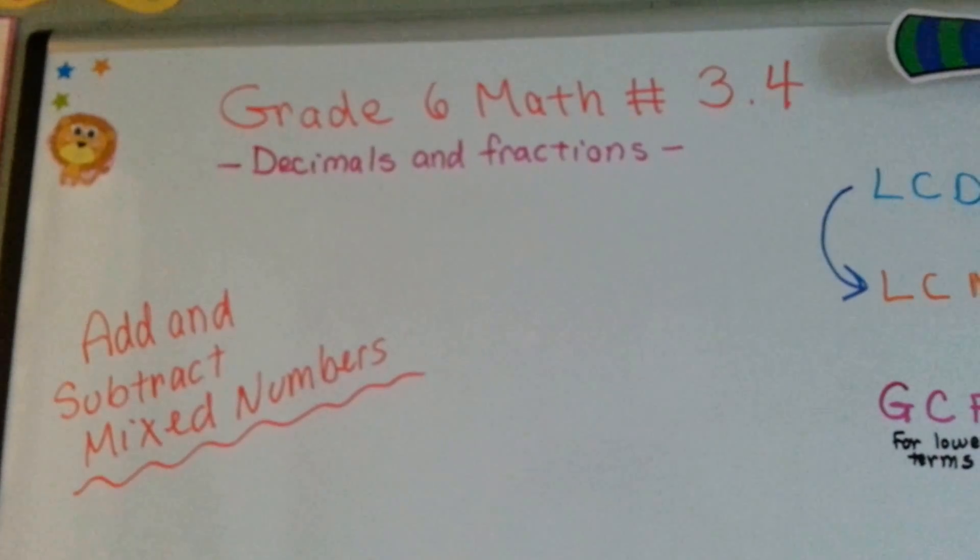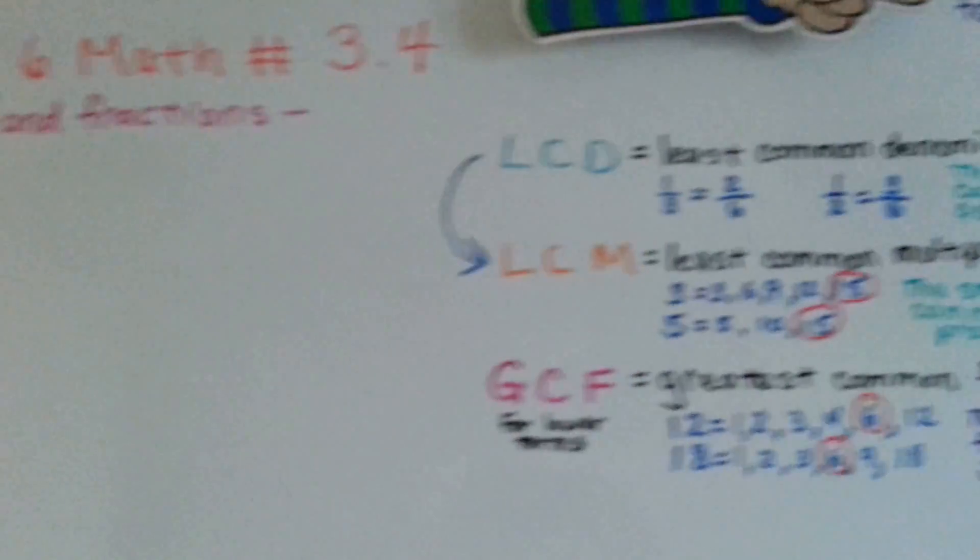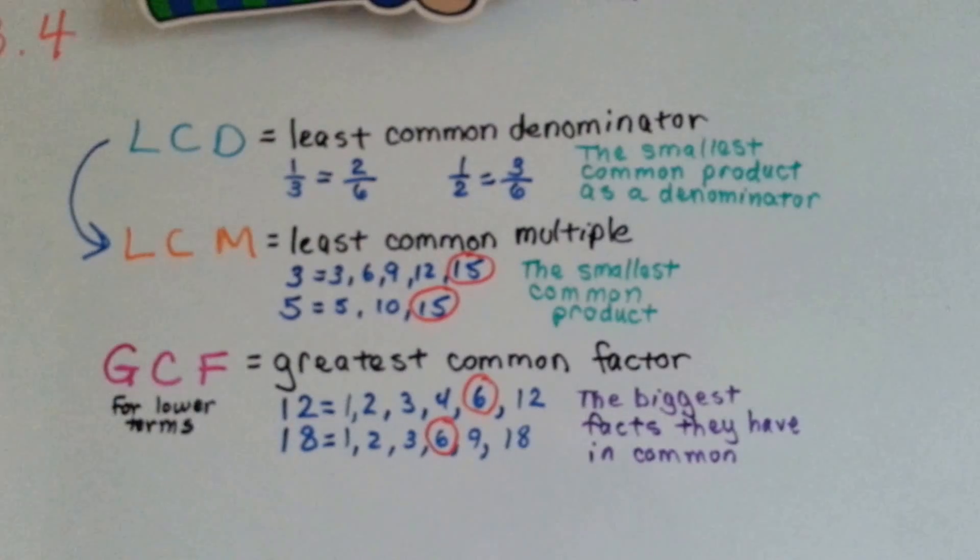Grade 6 math number 3.4. Add and subtract mixed numbers. I wanted to go over this really quick and put them all in one spot so it's easier to compare them.